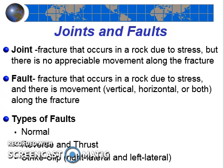Your textbook lists four types of faults, but we're going to lump them into three main types — we're going to lump reverse and thrust faults together and simply call them reverse and thrust faults. So the three types of faults we'll be studying are: first, normal faults; second, reverse and thrust faults; and third, strike-slip faults.